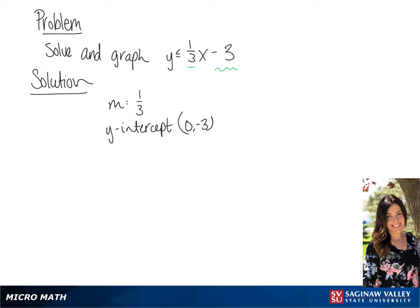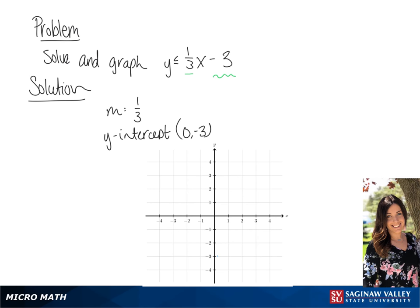We can use this information to graph the inequality. First, we're going to graph the y-intercept, which is 0, negative 3, then we will use the slope 1 over 3 to plot the next point and make our line. And since it's less than or equal to, it is a solid line.